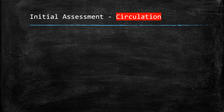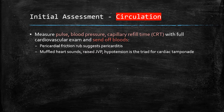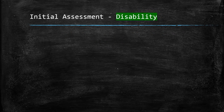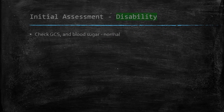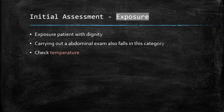Moving on to the cardiovascular examination. We would assess the pulse, blood pressure, capillary refill time, and carry out a full cardiovascular exam, sending off bloods. A pericardial friction rub would be heard in pericarditis, and muffled heart sounds together with raised JVP and hypotension would point towards cardiac tamponade. We would also check the GCS and blood sugar, which are normal, and carry out an abdominal examination and temperature, which would also be normal.